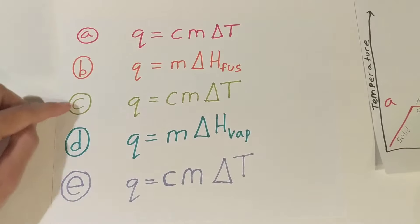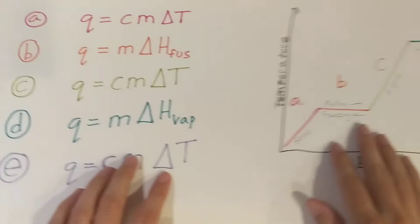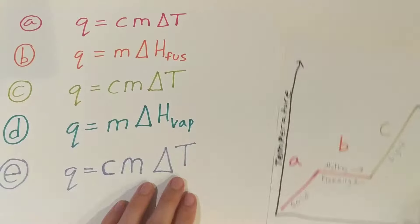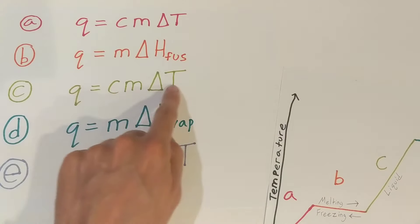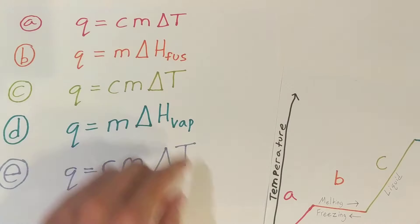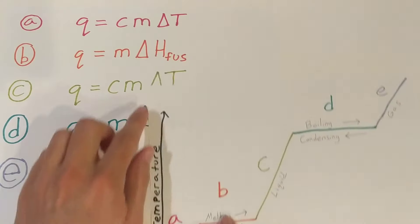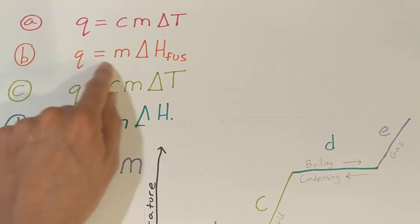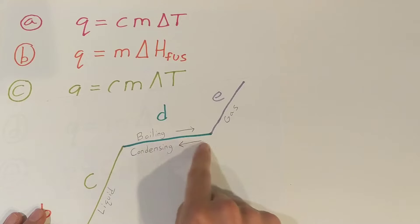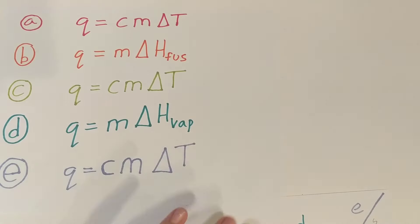For A, C, and D, they're all going to be the same because we have changes in temperature. So we use our change in temperature equation, and they'll just all have different C values. But when we are melting or freezing something, we use our enthalpy of fusion equation. And if we are boiling or condensing a substance, we use our enthalpy of vaporization.